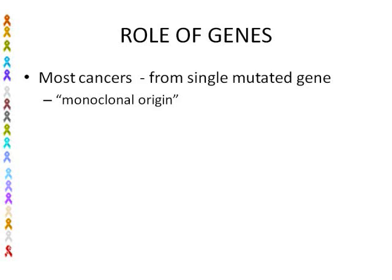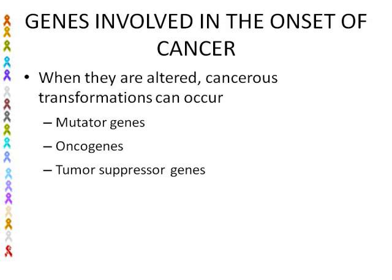The role of genes. Remember, genes control cellular processes. Most cancers come from a single mutated gene, and that's called monoclonal origin. Genes are involved in the onset of cancer — when these genes are altered, cancerous transformations can occur. There are three groups: the mutator genes, the oncogenes, and the tumor suppressor genes.